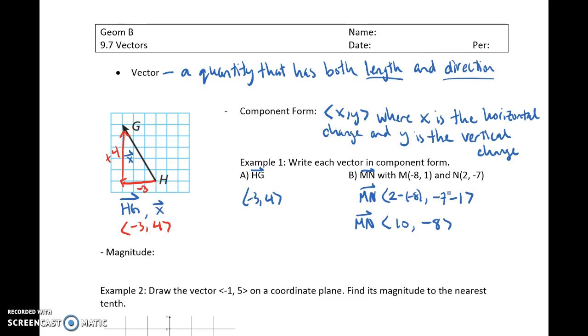Magnitude is the length of our vector. So remember, we had two pieces to it. Direction is our component form, which is where it's going, and length is what we call the magnitude.